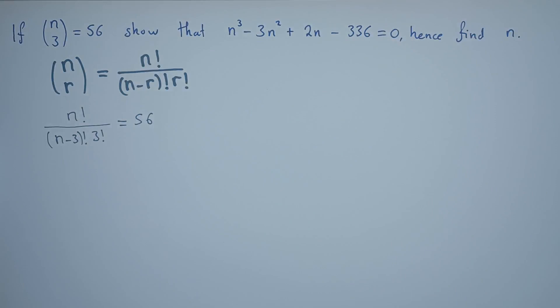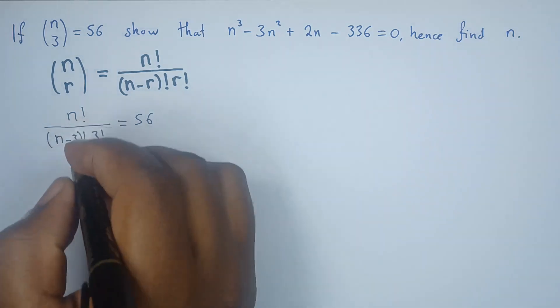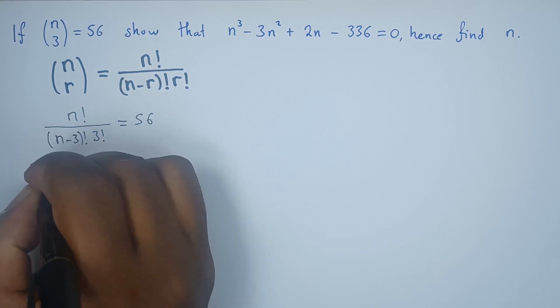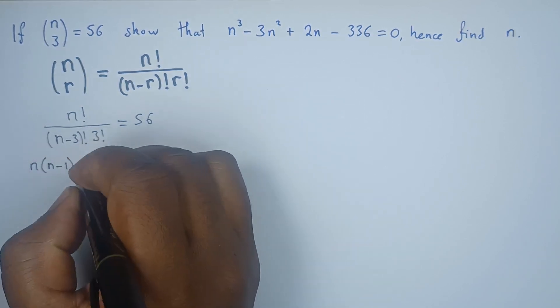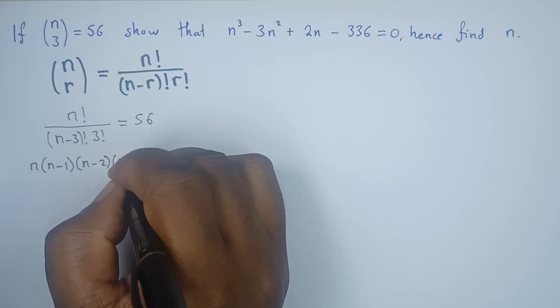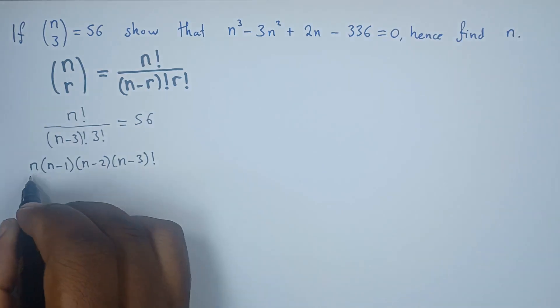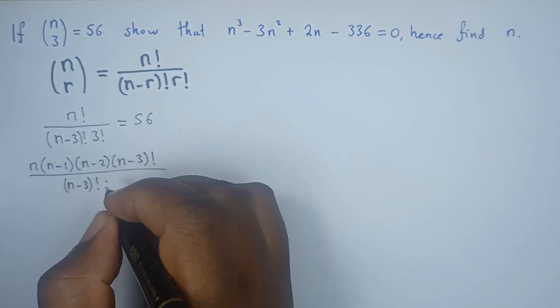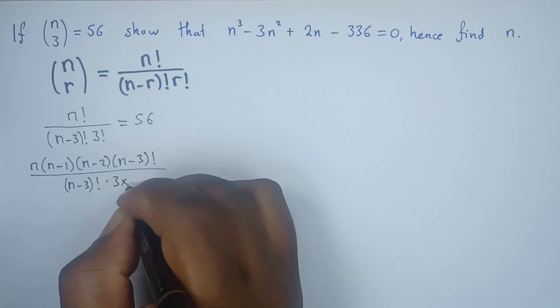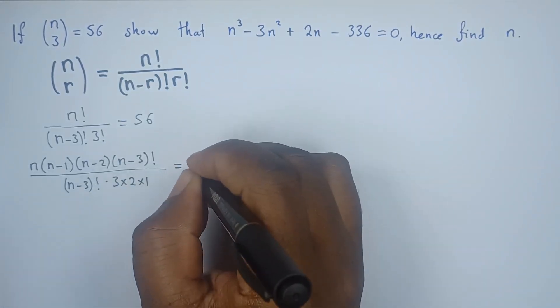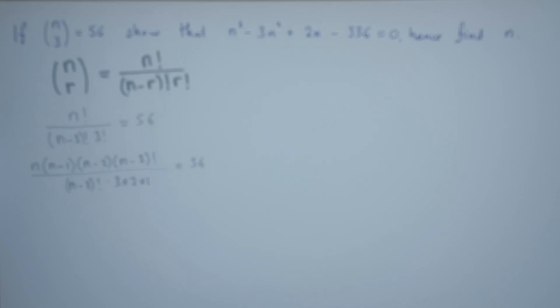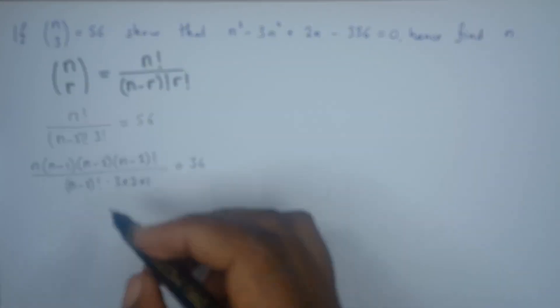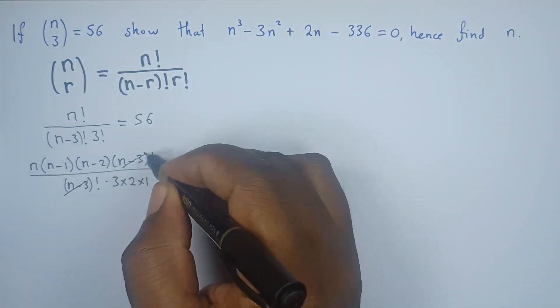So for the factorial, we have to break it down. n factorial is as good as n(n-1)(n-2) just like that. So where there's n factorial, we'll write it as n(n-1)(n-2)(n-3) factorial, simply because here we have (n-3) factorial, so we want them to cancel out. 3 factorial is 3×2×1. Remember, all this equals 56. If that's the case, you can clearly see that this and this will just cancel out.